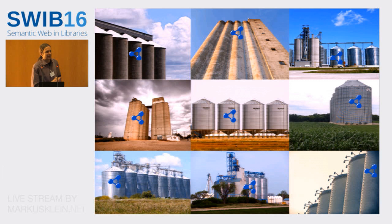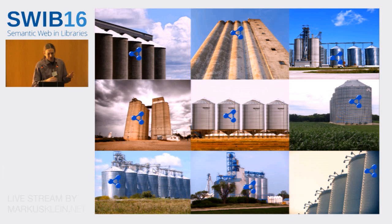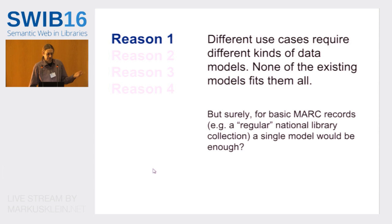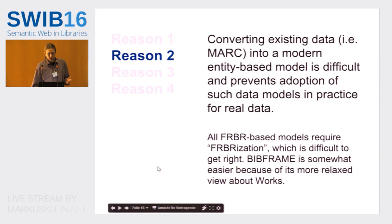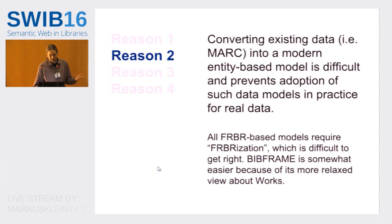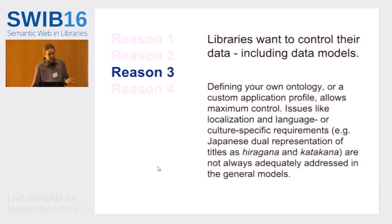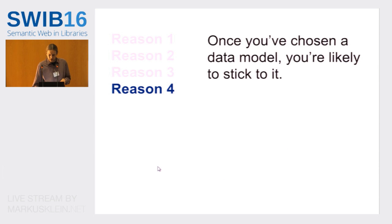The end result is that everybody is building their own silos using slightly different data models. In principle it's good since it's all linked data, but in practice it's very difficult to combine these because they're all different in various ways. Why does it have to be like this? First, different use cases require different kinds of models. Second, converting from existing data is difficult — going to FRBR models in particular is very difficult, while BibFrame is a little easier. Third, libraries want to be in control of their data and sometimes have local requirements. And finally, once you've adopted a specific data model, you're unlikely to change.